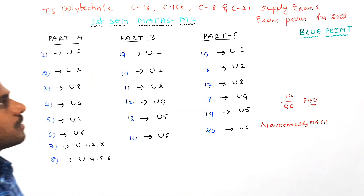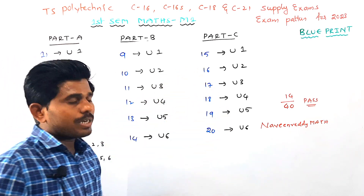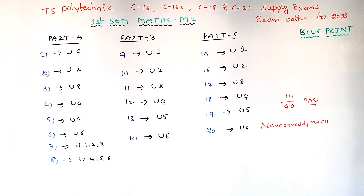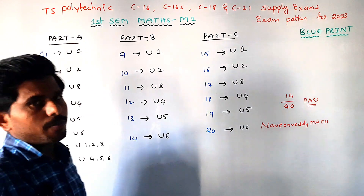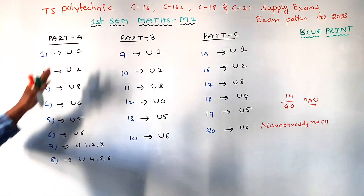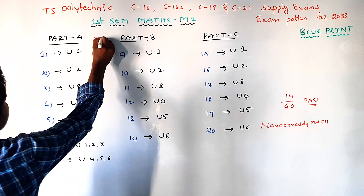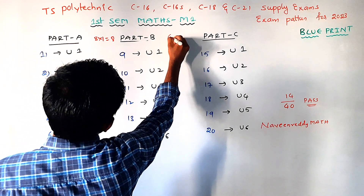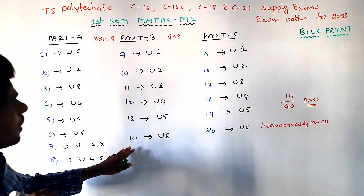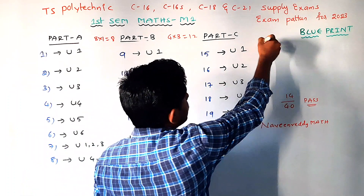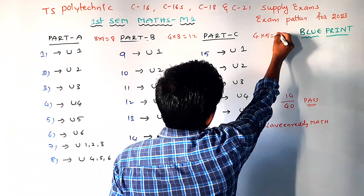In this video, according to the blueprint, we have 6 units total. To pass, you only need to prepare 2 units perfectly to reach the safe zone. The paper has 3 parts: Part A has 8 questions, each carrying 1 mark, totalling 8 marks. Part B has 6 questions — attempt 4, each worth 3 marks, totalling 12 marks. Part C has 6 questions — attempt 4, each worth 5 marks, totalling 20 marks.